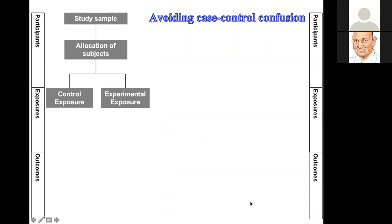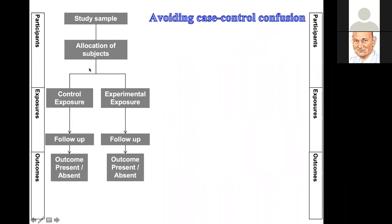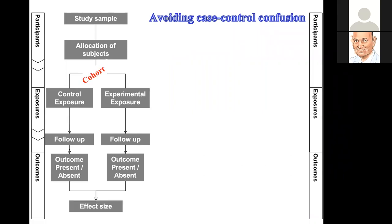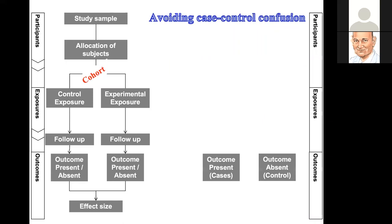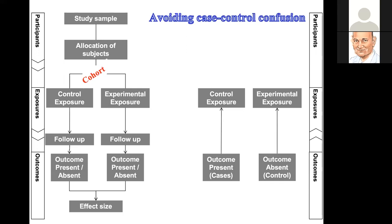First, I've said that there is confusion in the use of the term 'case control.' Case control can refer to a case-control design, but frequently there are errors in its use in the published literature. I highlighted that a study where people are allocated to receive experimental exposure or a new treatment compared to a control treatment, and then followed up for their outcome, is not a case-control study — it is a cohort study. In a case-control study, the starting point is outcomes: cases have the outcome present, controls have the outcome absent, and you go back in time to determine whether exposure was present or absent.